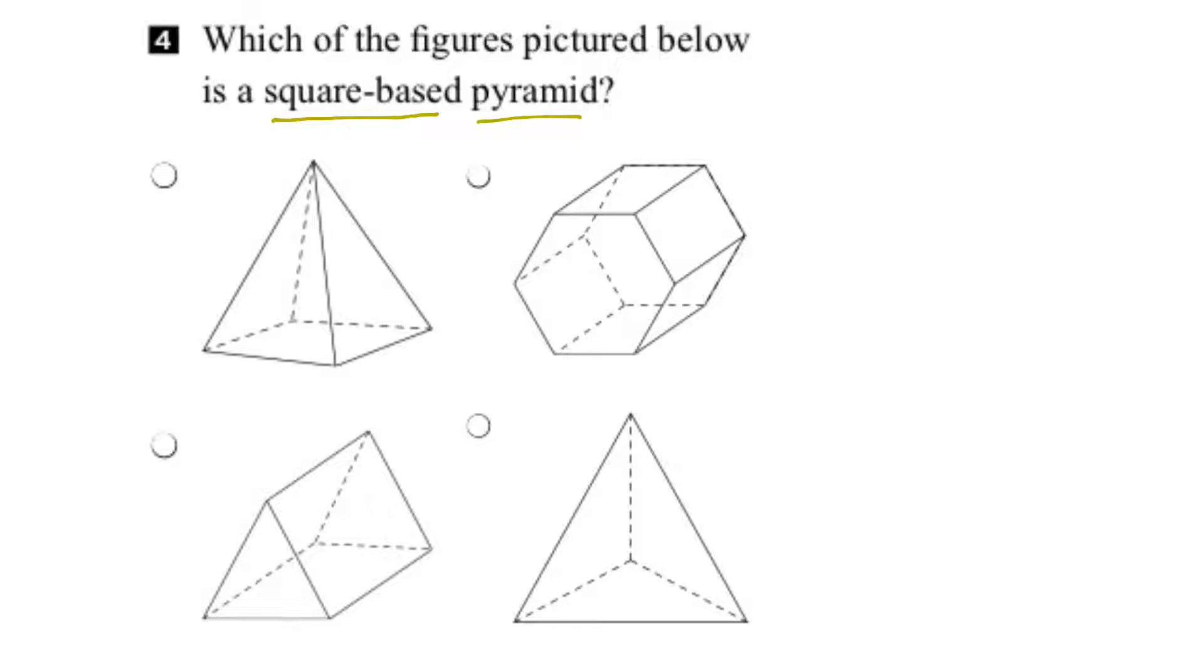The first thing we might notice is that pyramids always have a point at the top. So if we look at our figures, it looks like this first figure and the last figure here both have a point at the top, so they're both pyramids. The other two shapes don't, so we can actually eliminate those right away.